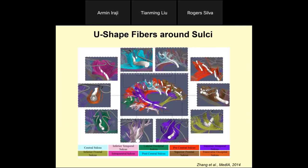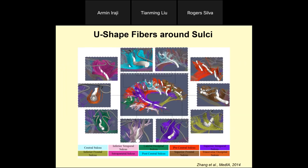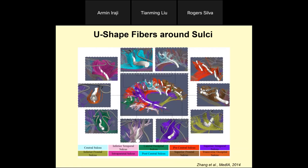Then we looked at why there is much less fiber connection on the sulci. We found that U-shaped fibers course around the sulcal fundus, running parallel to the cortical surface rather than connecting into it. That's why a lot of fibers concentrate on gyri but course around sulci. We measured all these U-shaped fibers across major sulci in the whole human brain, which explains the much less dense fiber connection patterns in sulci.